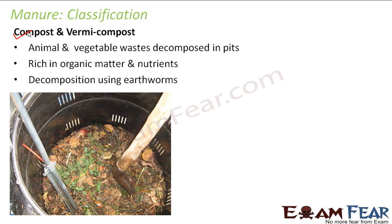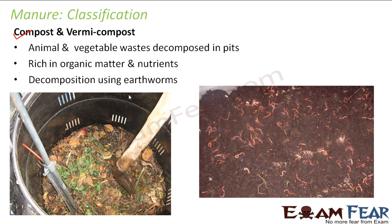Decomposition can also happen using earthworms. In this picture you can see that a lot of earthworms are put in a bin being harvested. The earthworms will eat the biological wastes — that means the plant and animal wastes. The castings of the earthworms, meaning the excretion of the earthworms, is known as vermicast, and that is the vermicompost. So earthworms feed on the biological waste and their castings are known as vermicast, which is vermicompost. By using earthworms, the decomposition process becomes a little faster.